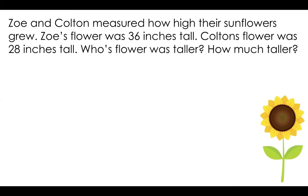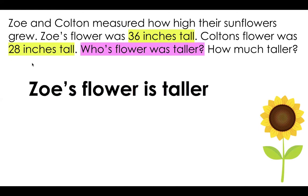So when we look at story problems, first we have to find the important numbers that we're working with. I know that I needed to know that Zoe's flower is 36 inches and Colton's flower was 28 inches. That is the important information. Then I have to ask what question is the problem asking me. The first question this problem asked me is whose flower was taller? And I know Zoe's flower is taller because I know that 36 is bigger than 28.